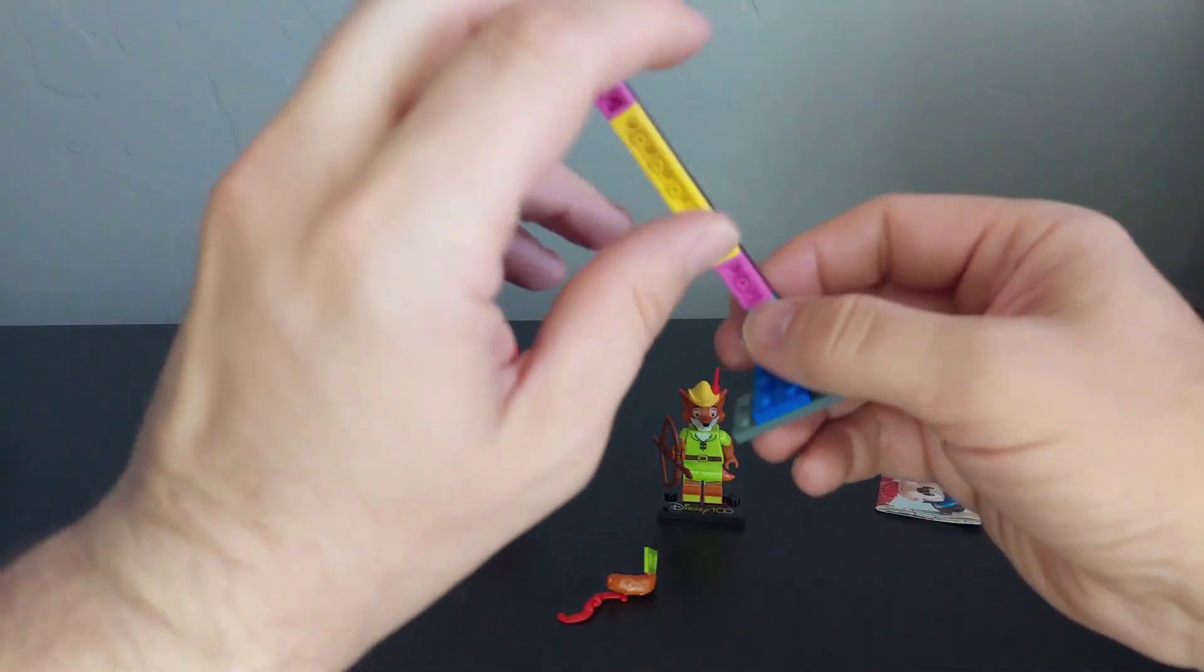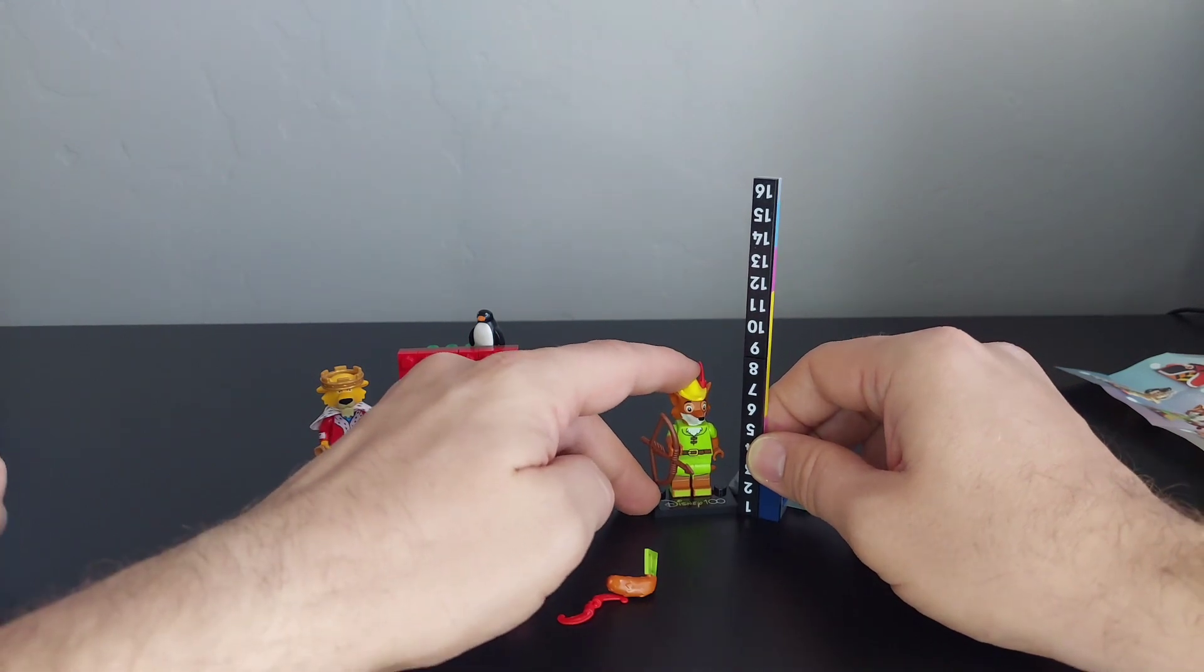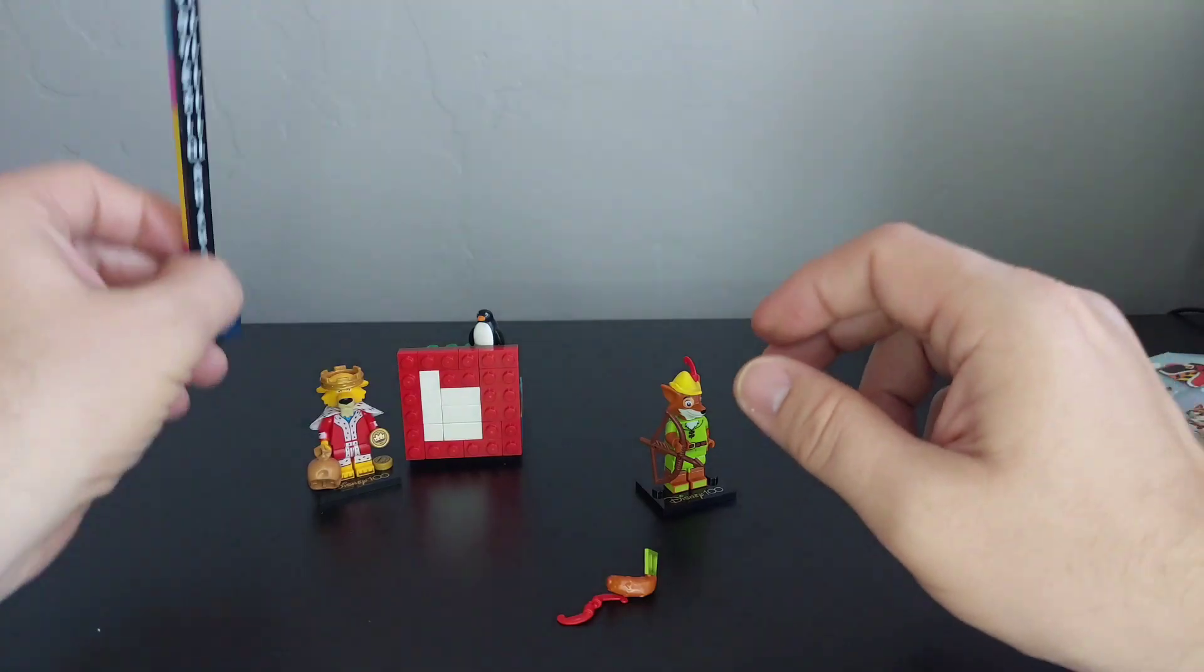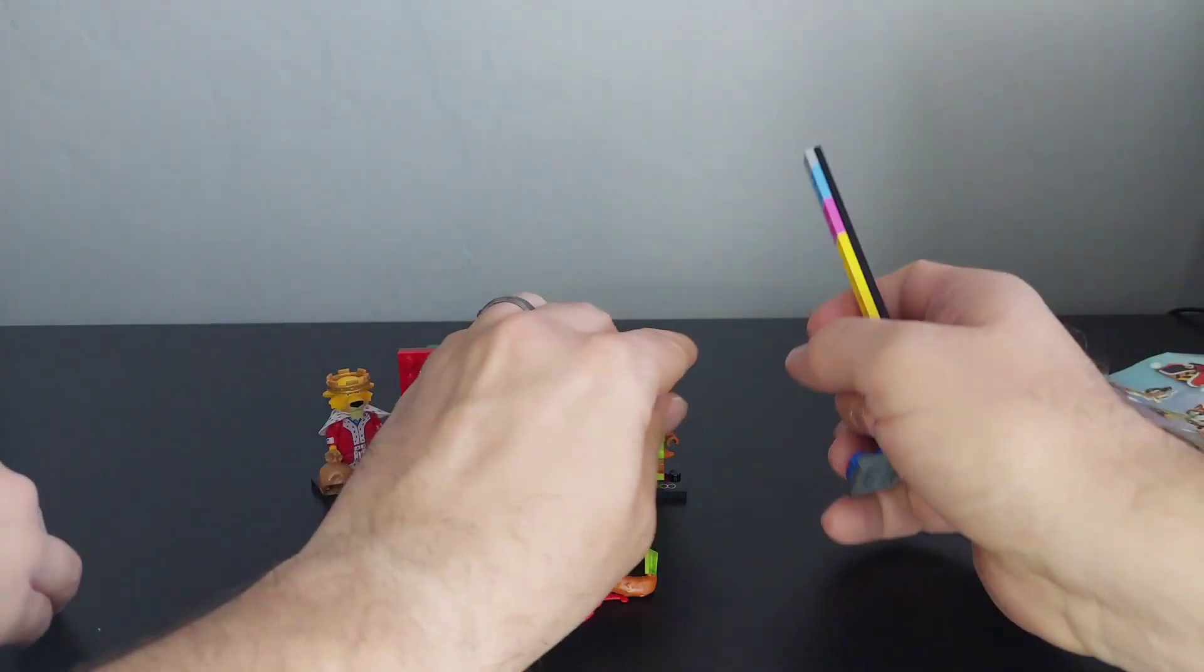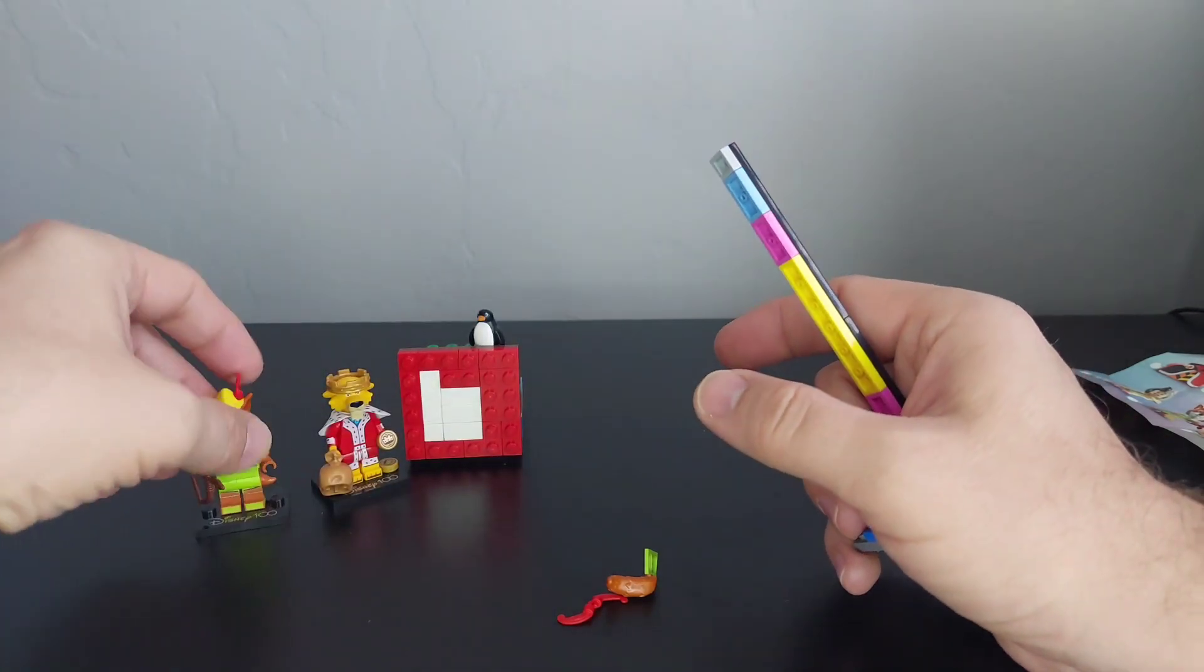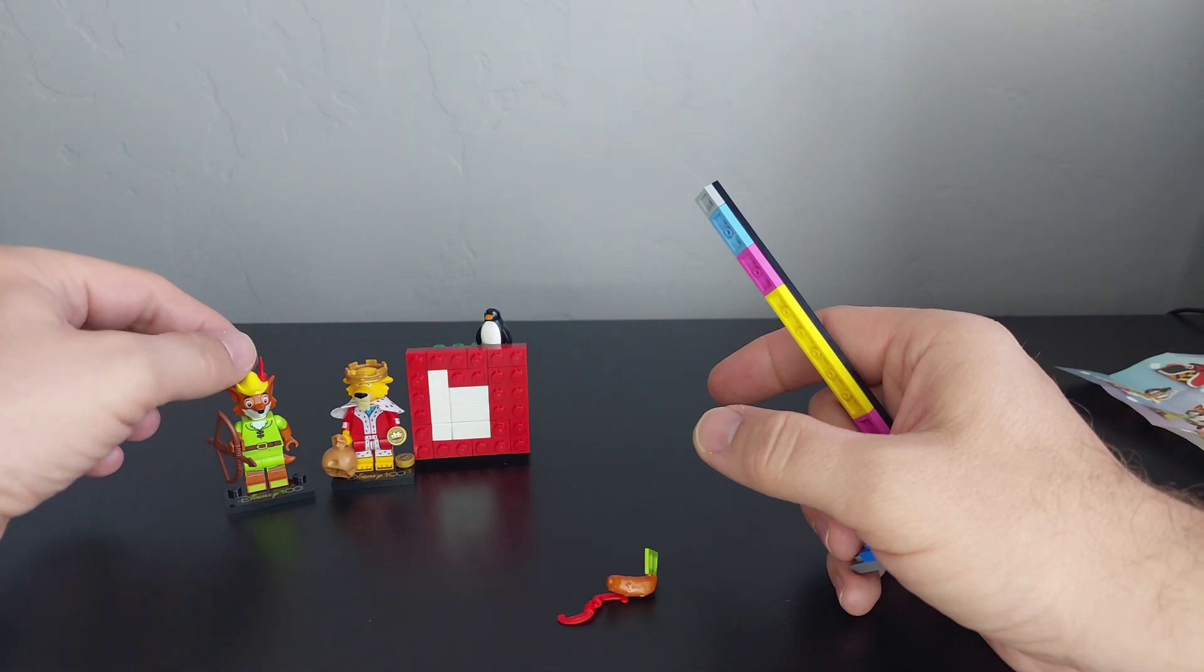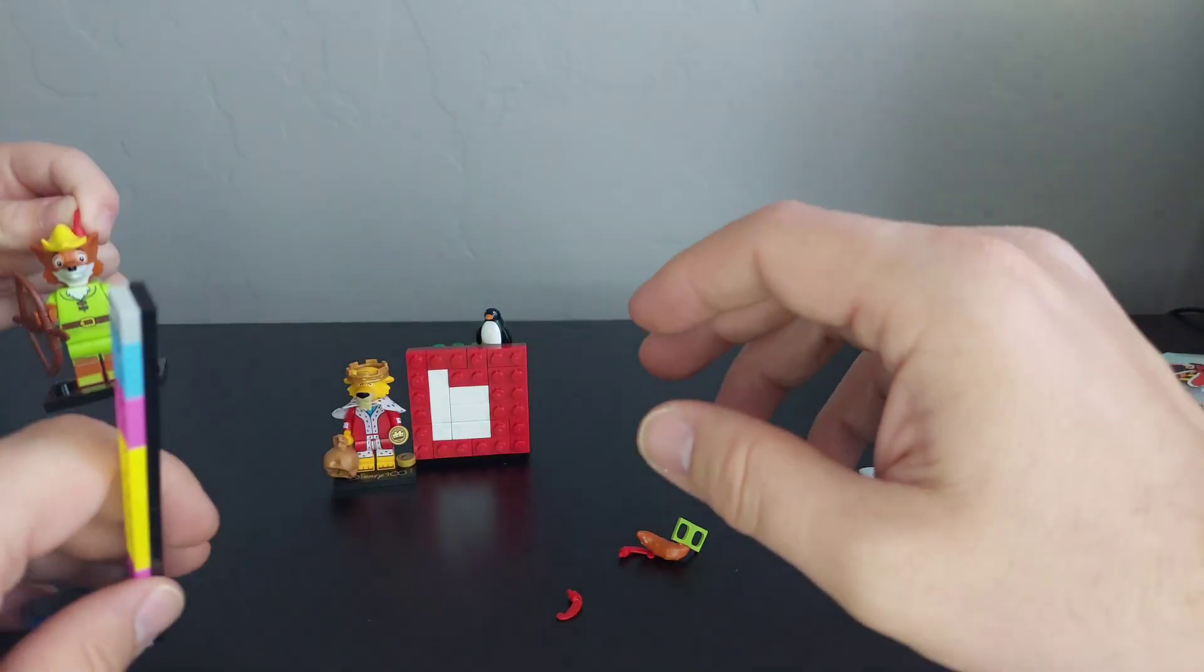Let's see how tall he is. He is, I'm gonna say, seven. So he's a little bit taller than Prince John who's six, but he does have the extra height of the tail and the arrow.